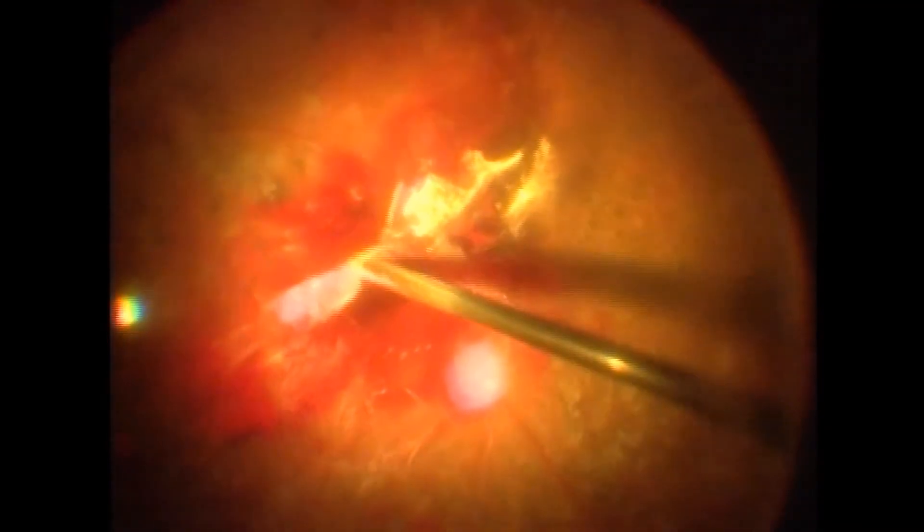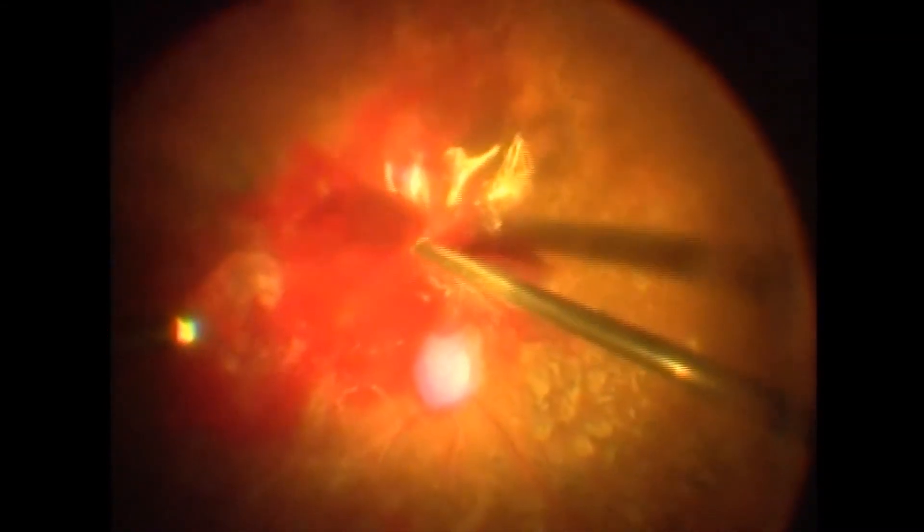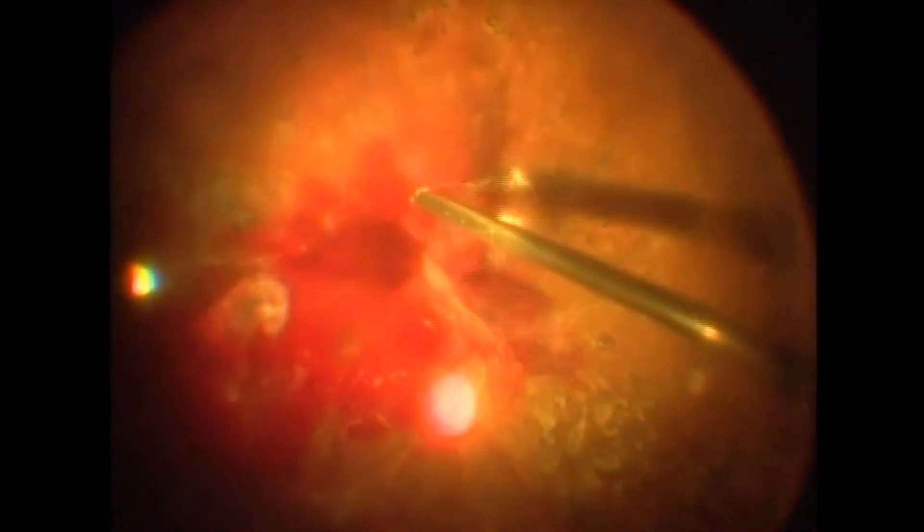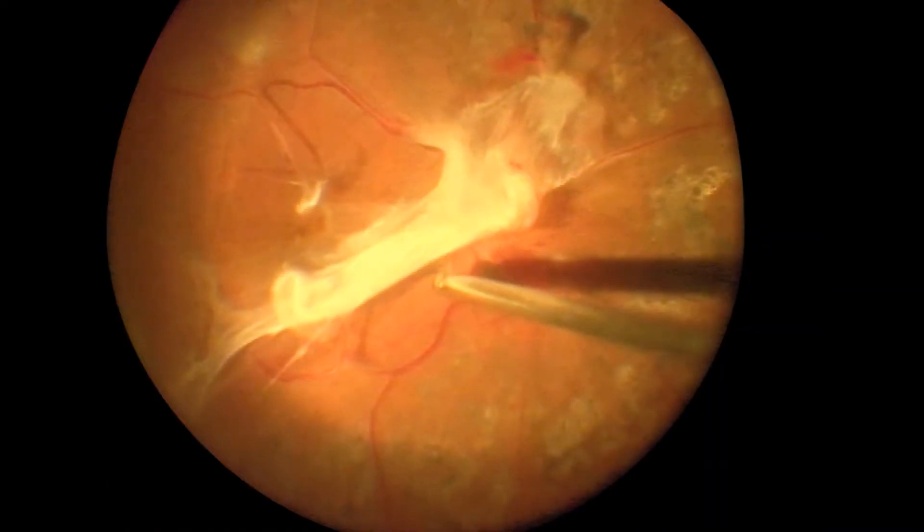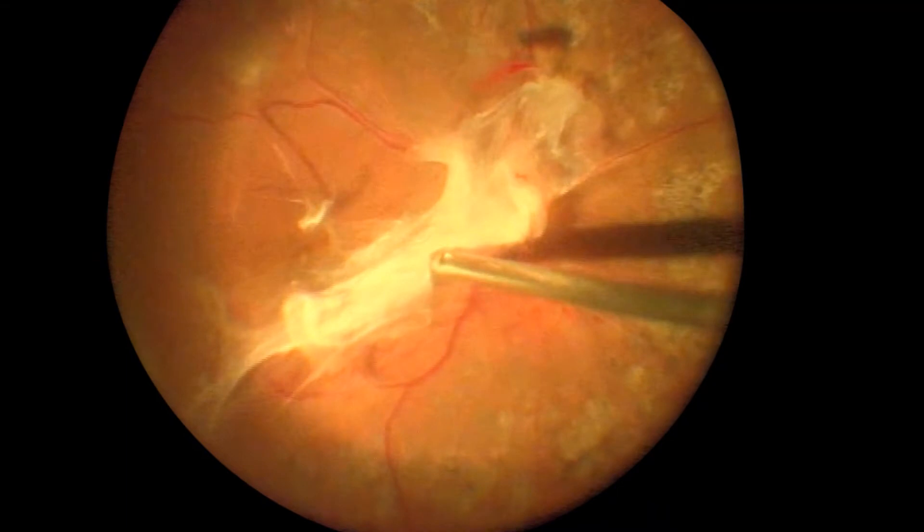This is a video showing segmentation of membrane where adequate cleavage plane is available to introduce the vitrectomy probe. This video demonstrates segmentation using vitrectomy probe where the probe tip is introduced between fibrovascular membrane and retina, breaking the fibrovascular membrane into smaller fragments.